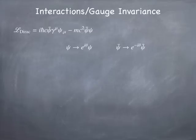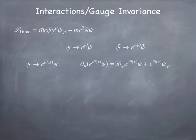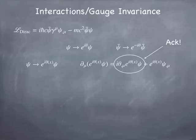Psi and psi-bar always appear in pairs. If theta is just a constant number, the spatial derivative doesn't do anything to it, and the Dirac Lagrangian is invariant under this global phase transformation. But what if we try the same trick with a local phase — where at every point in space, theta can be a different function of position? There's trouble, because the Lagrangian contains a derivative with respect to x-mu, and taking that derivative will generate a term with the derivative of theta with respect to x-mu, so the Lagrangian is not invariant.